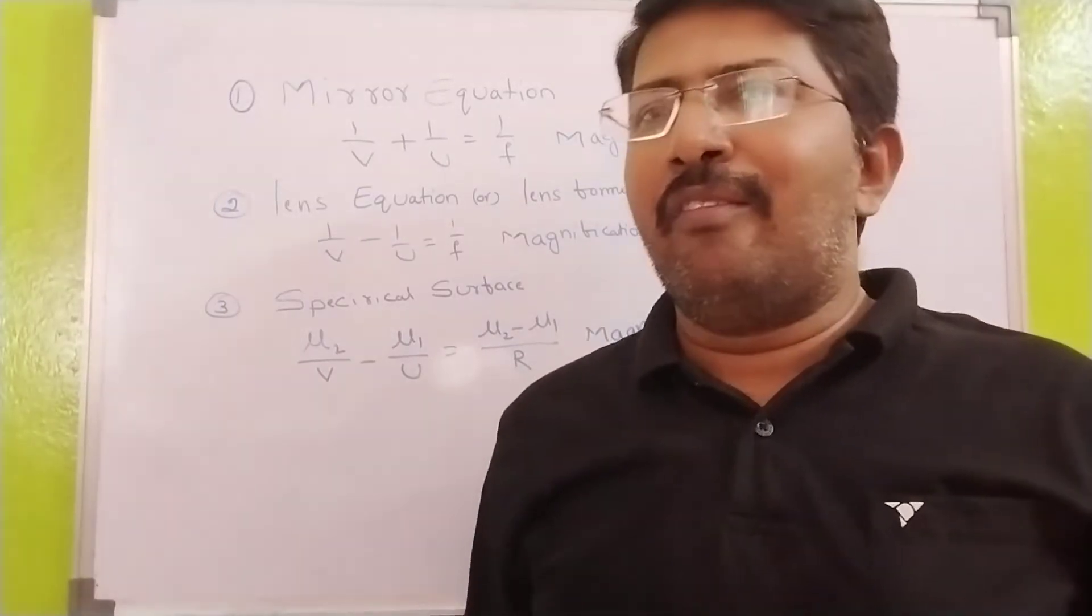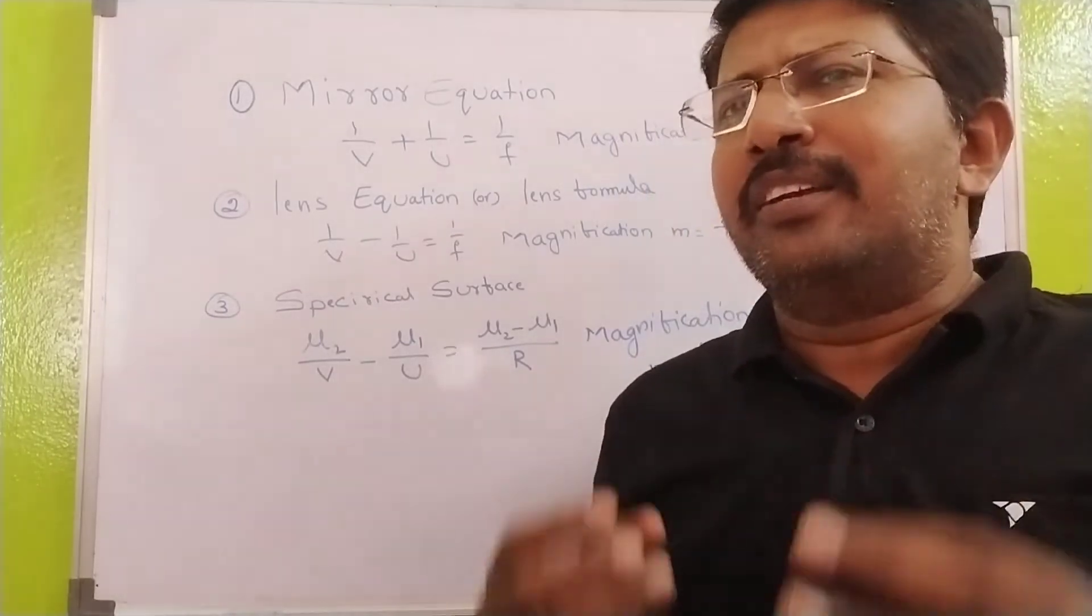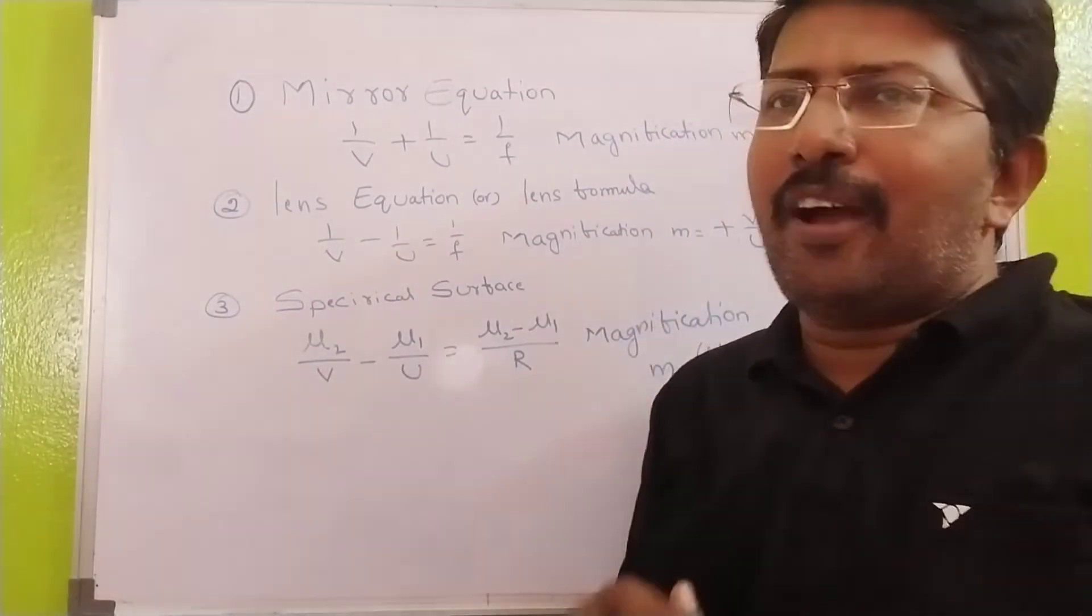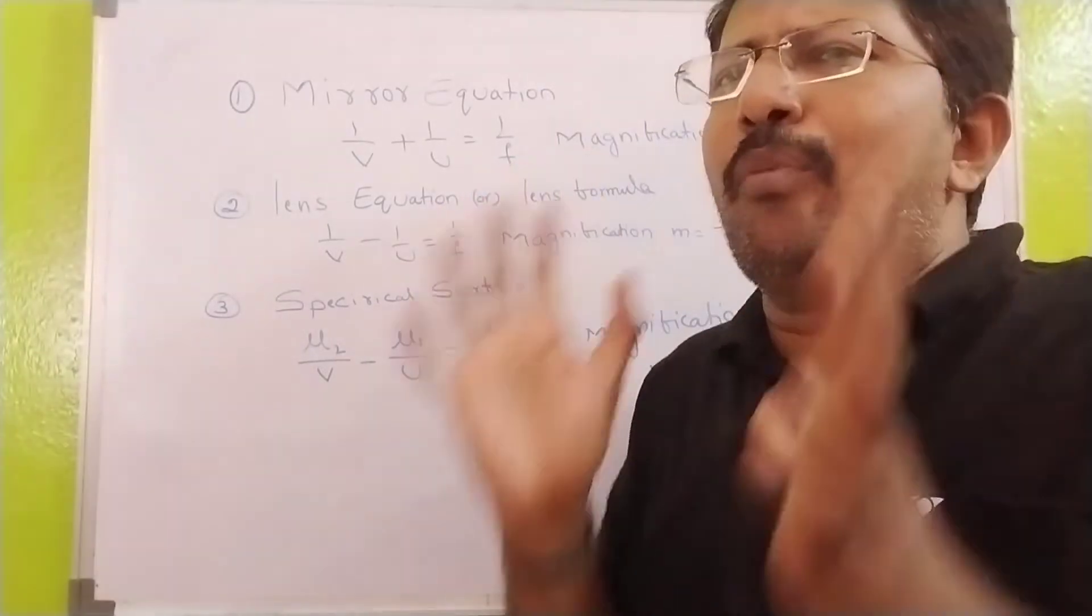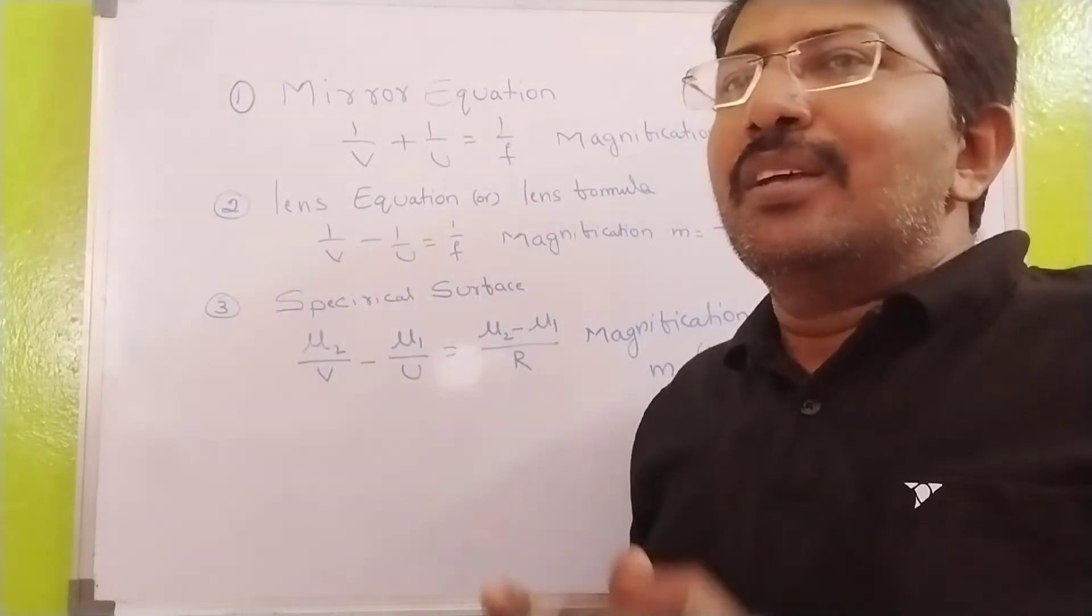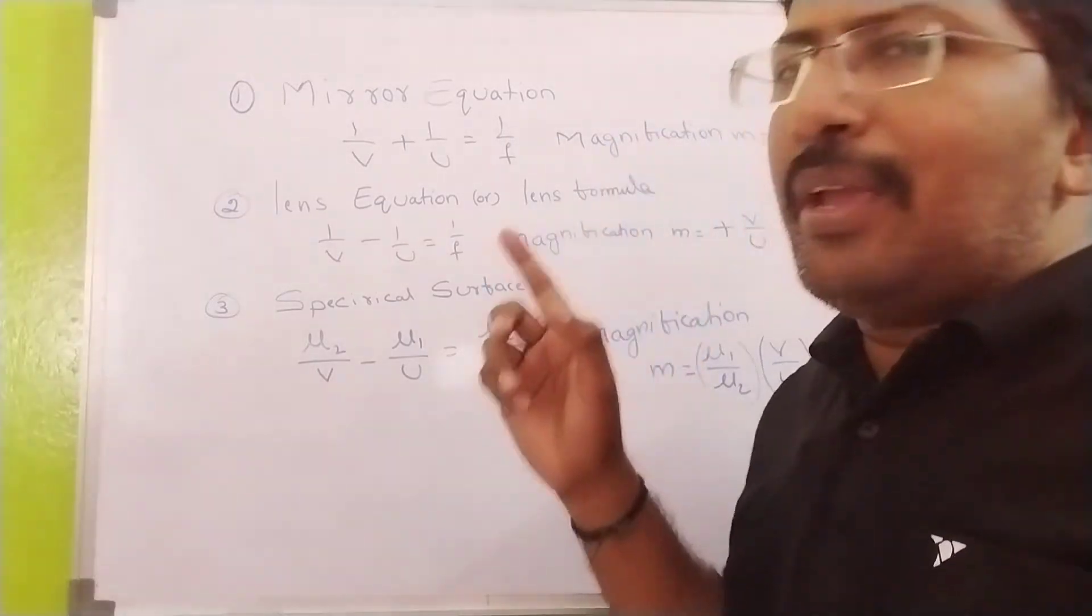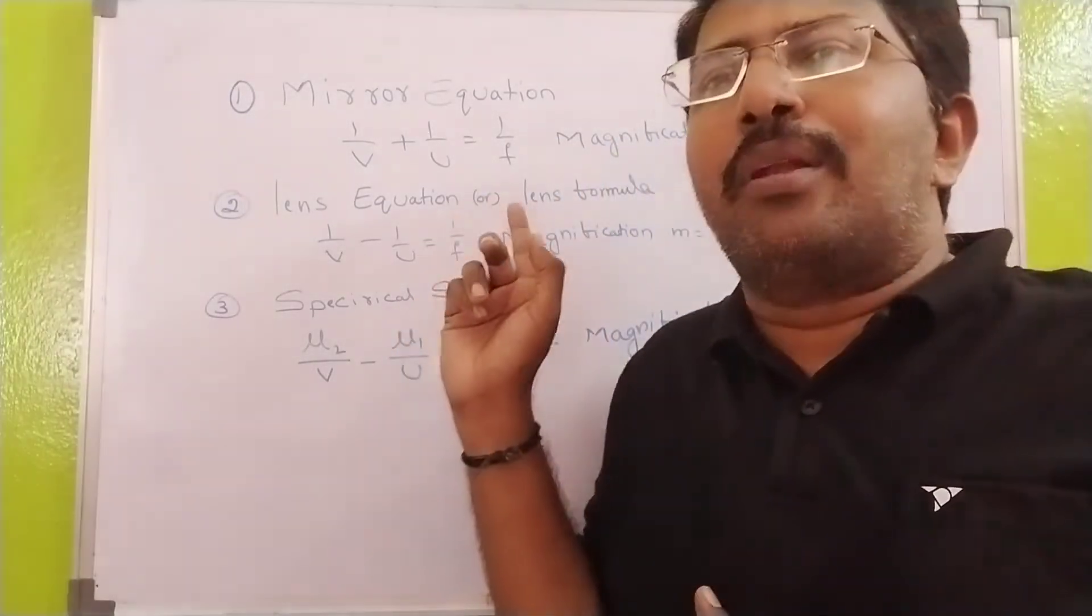My dear students, today I will bring some important tips based on ray optics. You know these three formulas, very very important formulas. So if you observe mirror equation: 1 by v plus 1 by u equal to 1 by f.